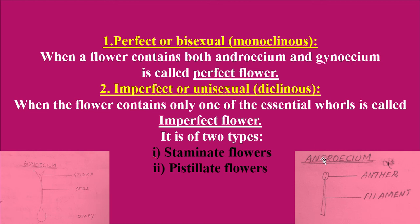This is the androecium, which bears the stamen. This is the anther, which bears the pollen grains. This tack-like structure is called the filament, which holds the anther. If both these parts are present in a single flower, then that flower is said to be a perfect flower.